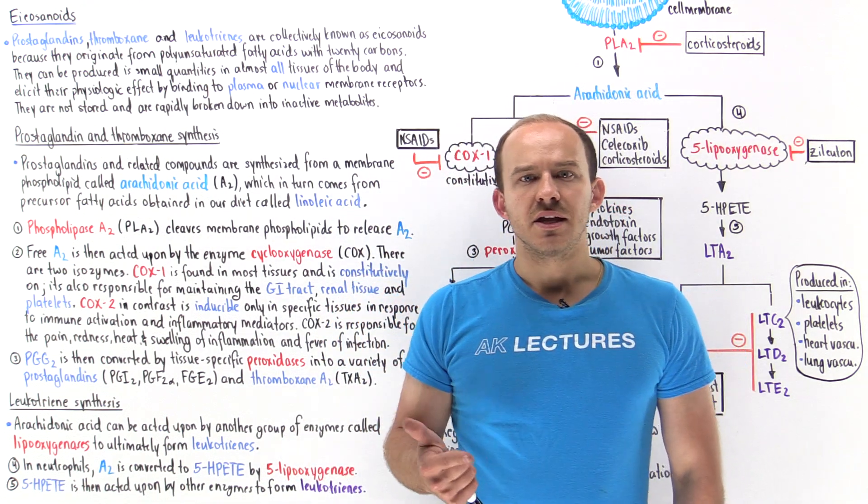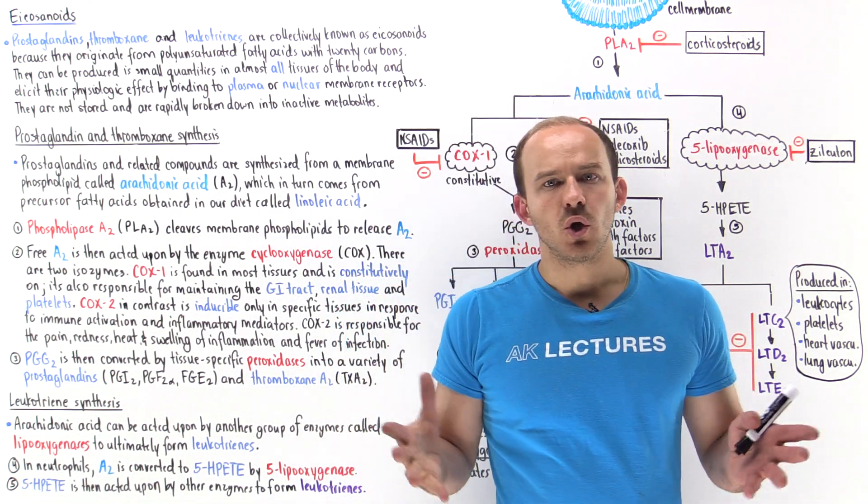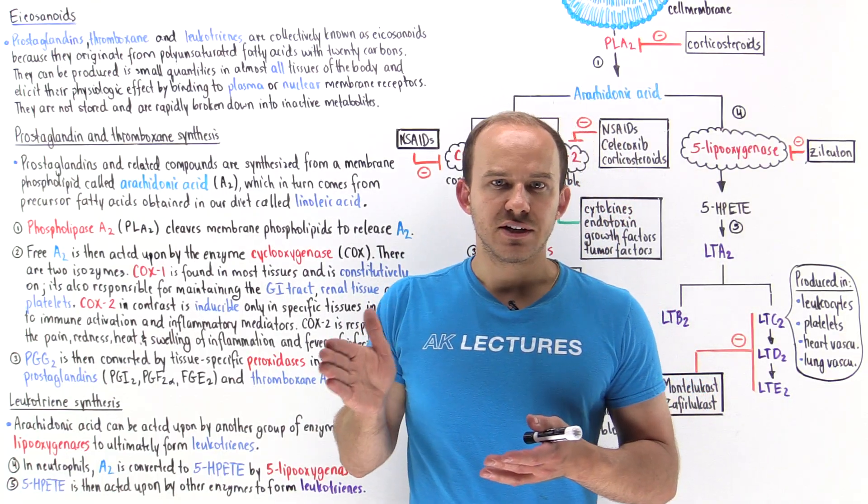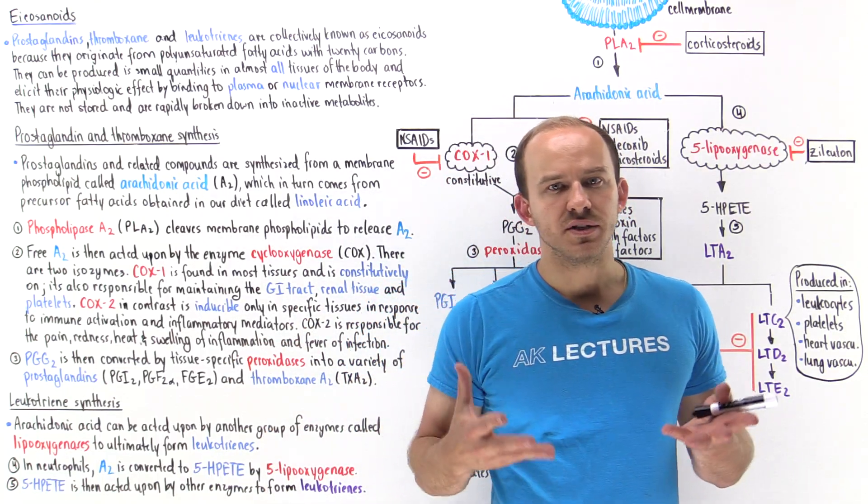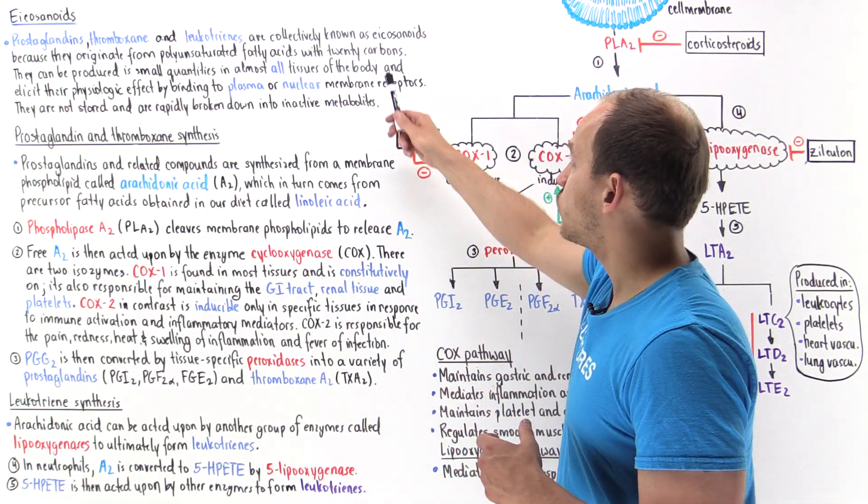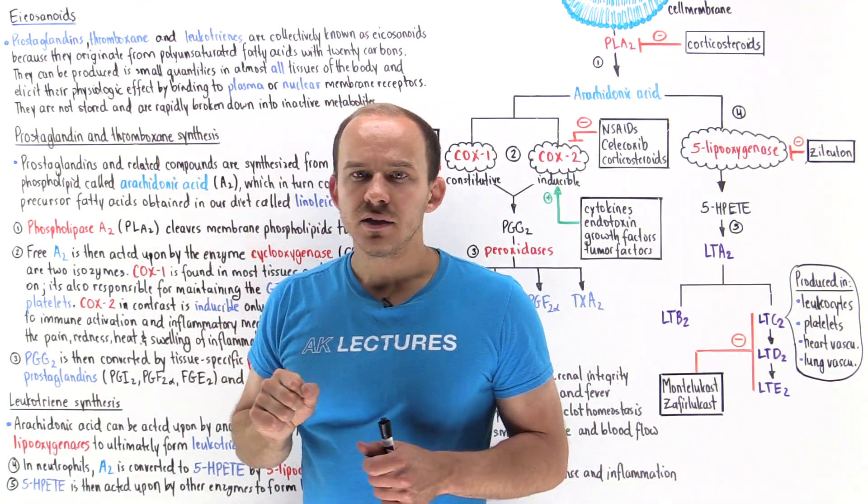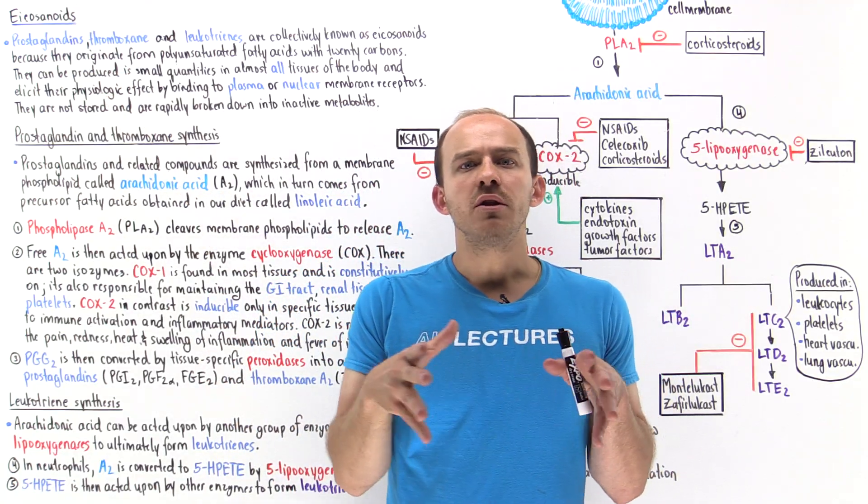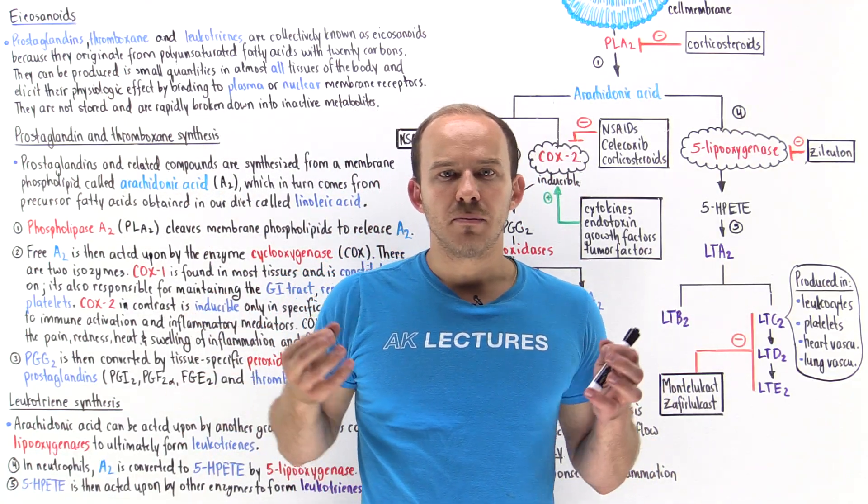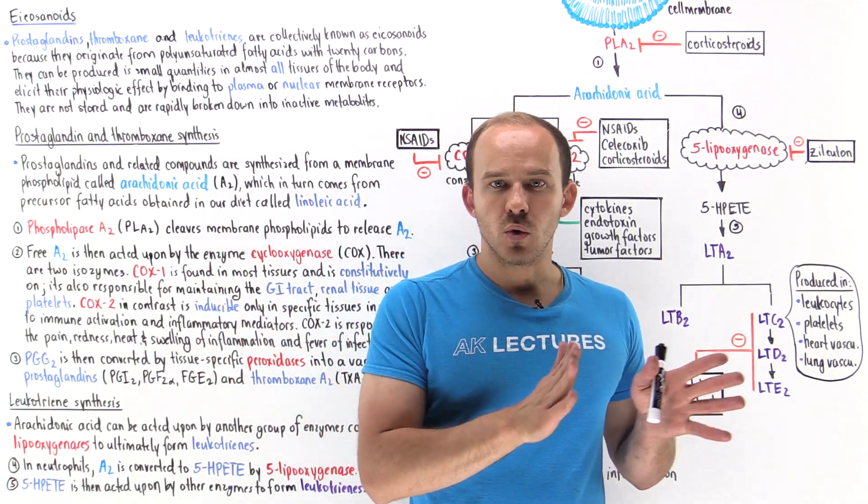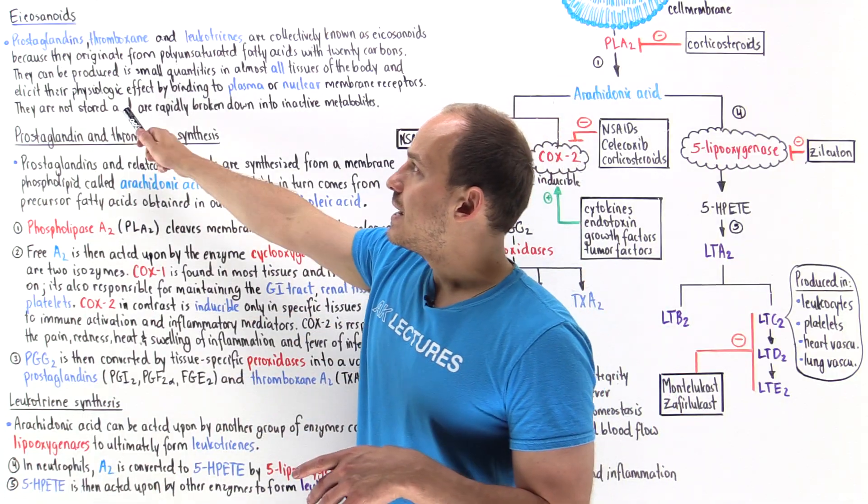Prostaglandins, leukotrienes, and thromboxane are collectively known as eicosanoids because they originate from polyunsaturated fatty acids that contain 20 carbon atoms. The prefix eicosanoids means 20 atoms. These molecules are produced by essentially all the different types of tissues in our body in very small quantities and they act as important local mediated molecules.